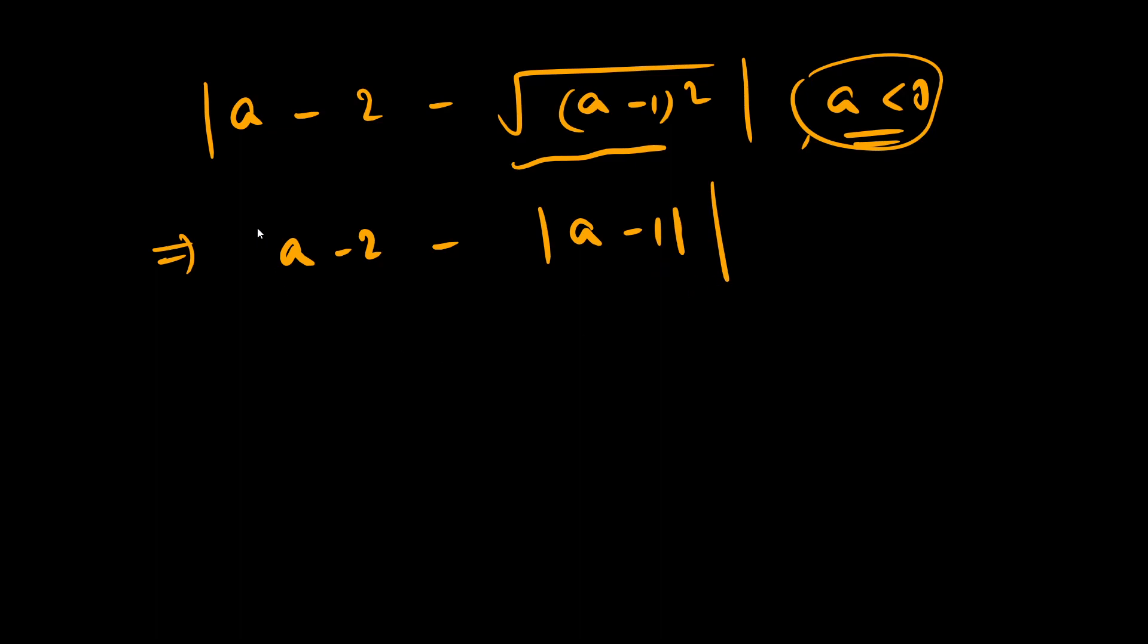Now since a is negative, this overall value will be negative, which means I will have to open this with a negative sign. So we get -(a - 2 - |a-1|).